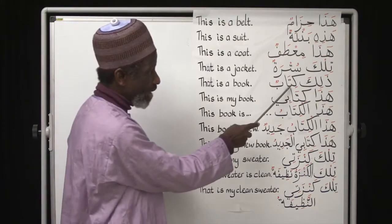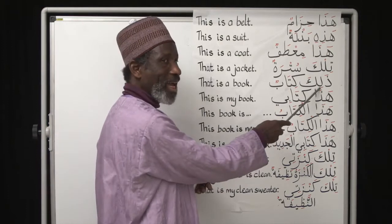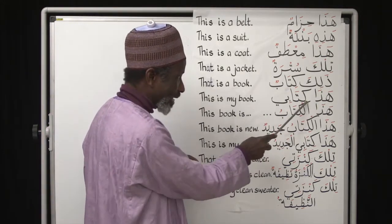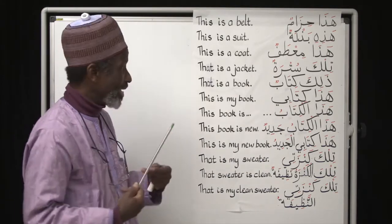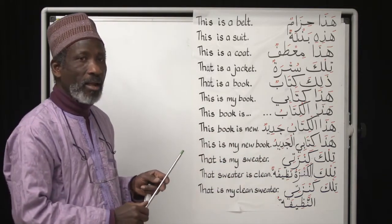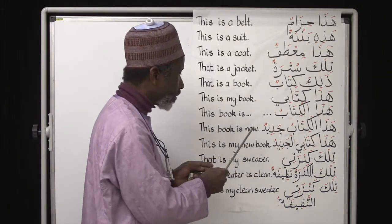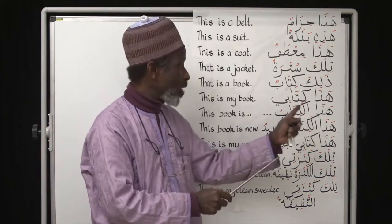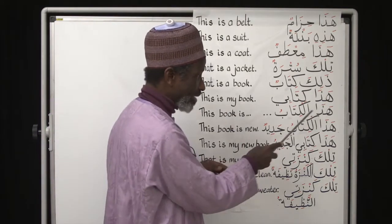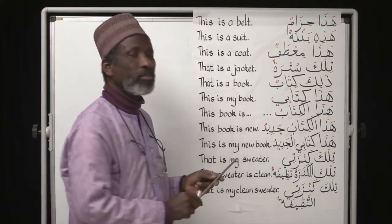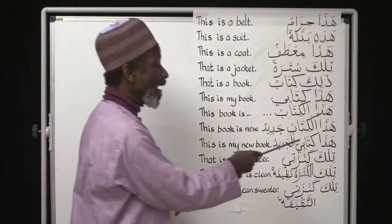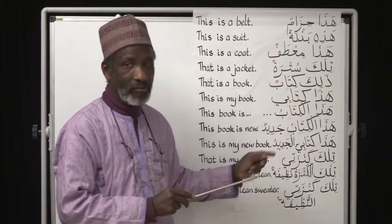When we have 'kitābun,' a book, we use dhālika: 'dhālika kitābun' — that is a book. 'Hādhā kitābī' — you know how to say 'my': the 'ī' ending — kitābī — so this is my book. 'Hādhā al-kitābu' — now you have 'al' after hādhā, so we say 'this book,' not 'this is.' Literally: this and then the book, so it becomes 'this book.' 'Hādhā al-kitābu jadīdun' — we drop the 'al' and add 'jadīdun': this book is new.